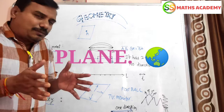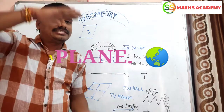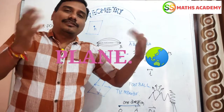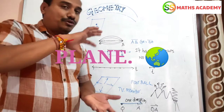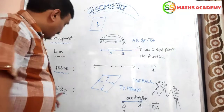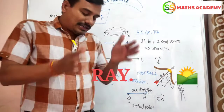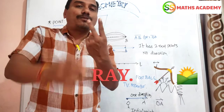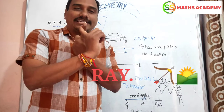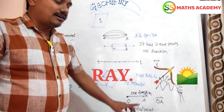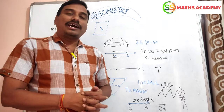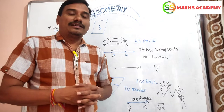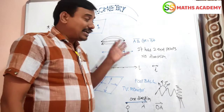Plane is a flat surface that extends in all directions in equal, uniform manner — examples include football and TV monitor. Ray is a part of a line consisting of one initial point and one endless direction. This is the basic concept of geometry. I assure you that you have understood. In the next class, I am going to explain more beautiful geometric concepts with diagrams.